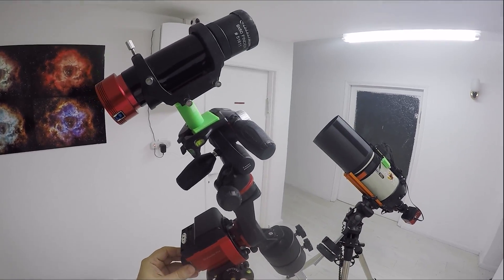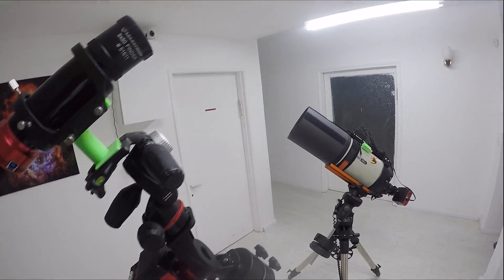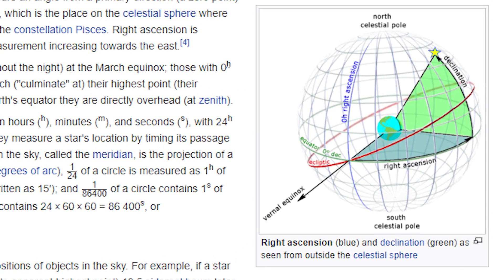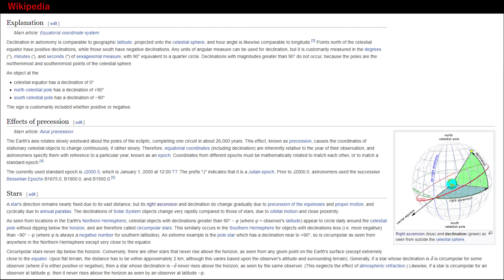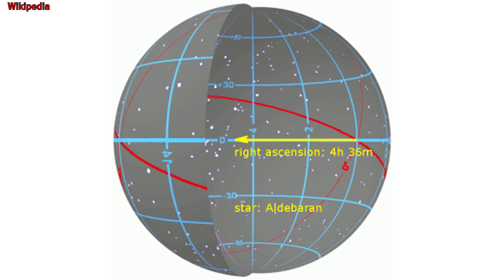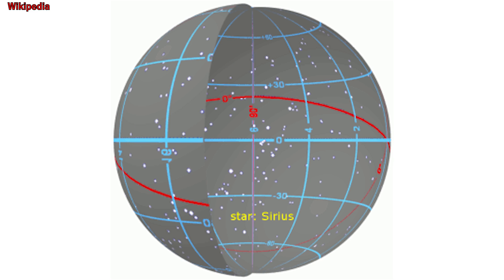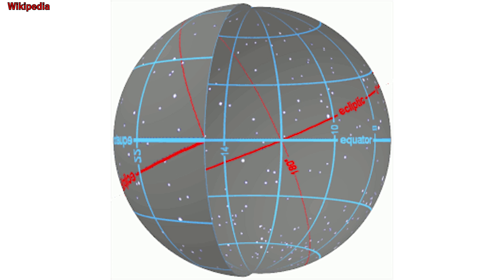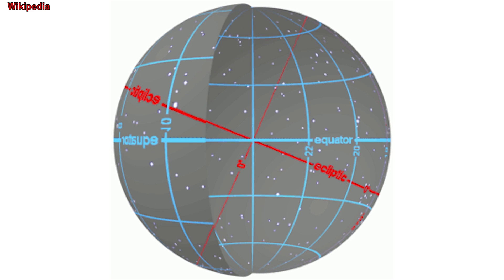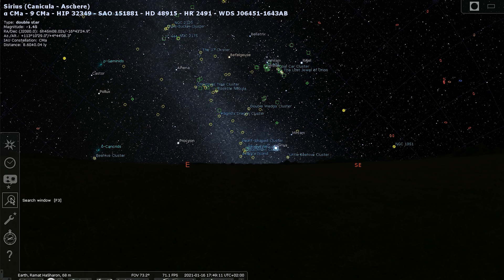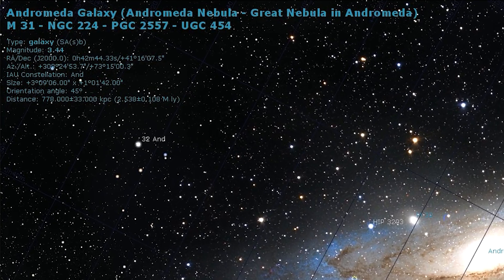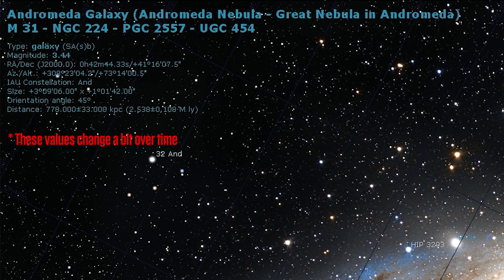An equatorial mount can move in two axes: RA and DEC. RA stands for right ascension, and is the axis in which the Earth rotates. DEC stands for the declination axis, which is perpendicular to the right ascension axis, and is the distance from the celestial equator to objects north or south of it. Declination is measured in degrees from the celestial equator, so the edges are 90 degrees and negative 90 degrees. Right ascension is measured in hours, since the Earth does a full rotation every 24 hours. For example, the Andromeda Galaxy sits at right ascension 0 hours, 42 minutes, 44.3 seconds, and a declination of positive 41 degrees, 16 minutes, 9 seconds.